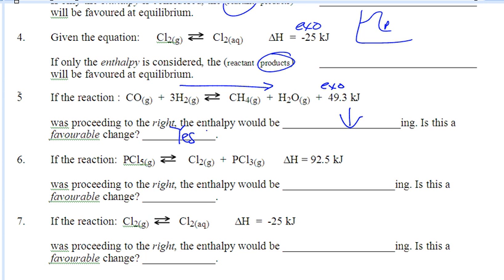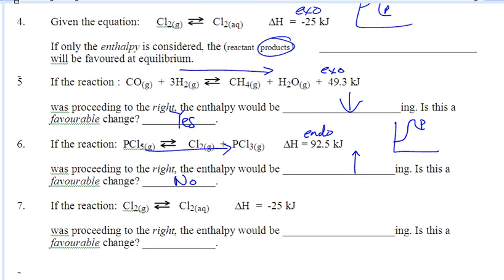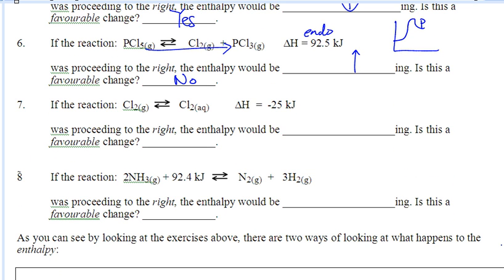It wants to have the least enthalpy possible. Here's the reaction — this is endo. If this reaction was proceeding to the right, enthalpy would actually be increasing. Because if you draw this out, it's going to look like that. So if it was making the products, this is actually an unfavorable change. It doesn't really want to make products in this case — it wants to stay as reactants. For seven and eight, very similar: exothermic proceeding right means enthalpy is decreasing — that is a favorable change. In eight, it's endo, proceeding to the right would be increasing in enthalpy, and this is not a favorable change.